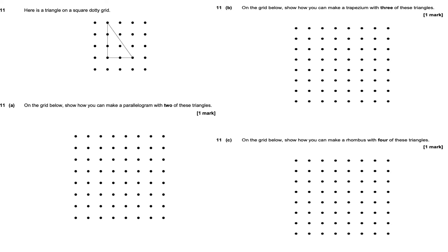This is question number 11 on the AQA June 2019 Paper 1 Foundation Tier Non-Calculated Paper. Here is a triangle on a square dotty grid, so we've got a triangle here.